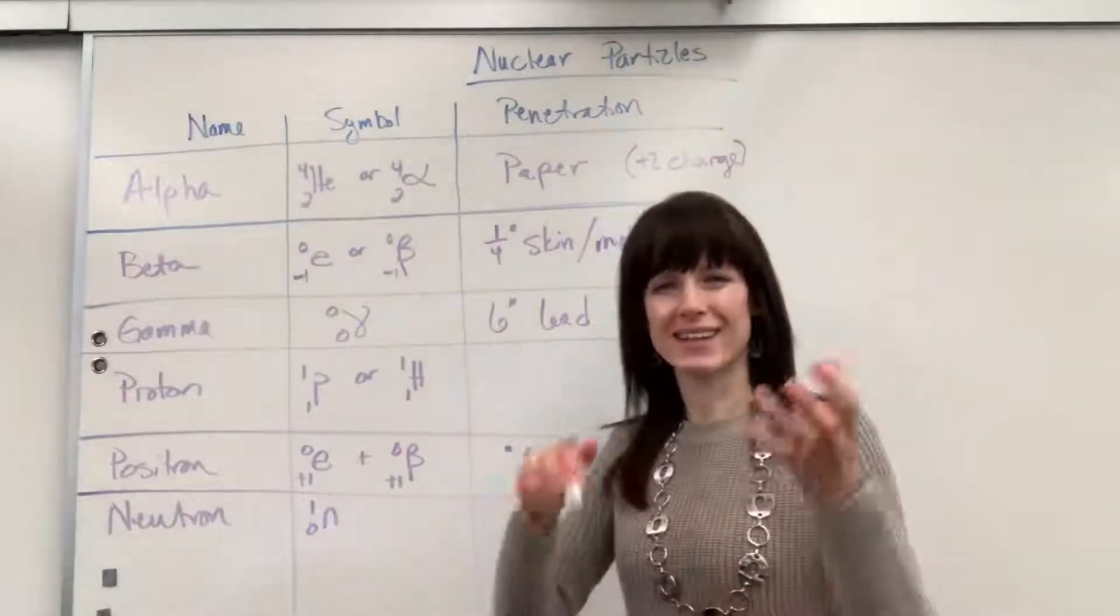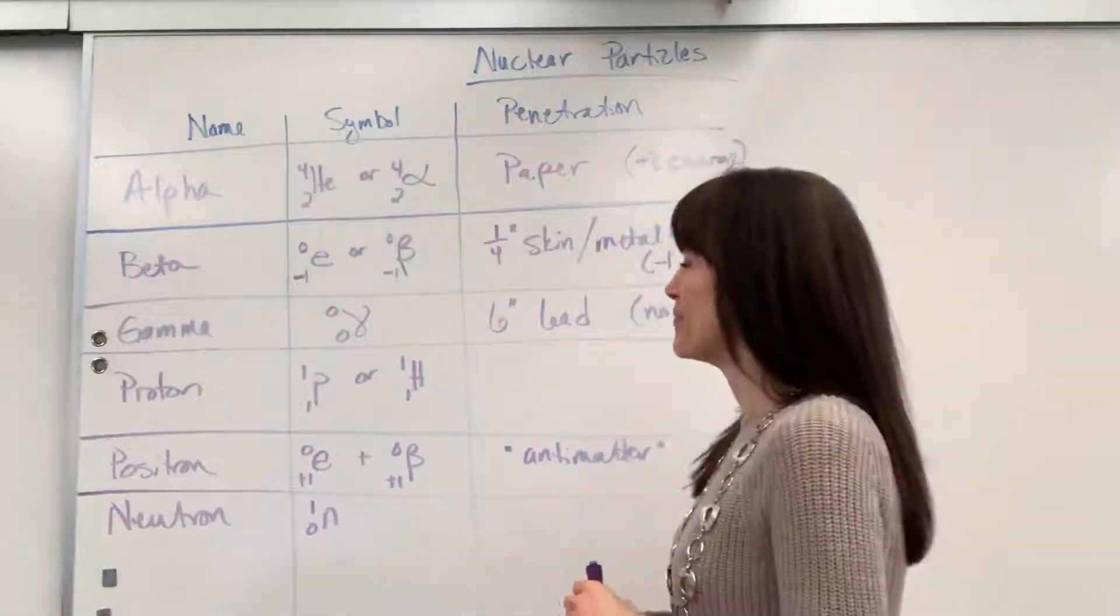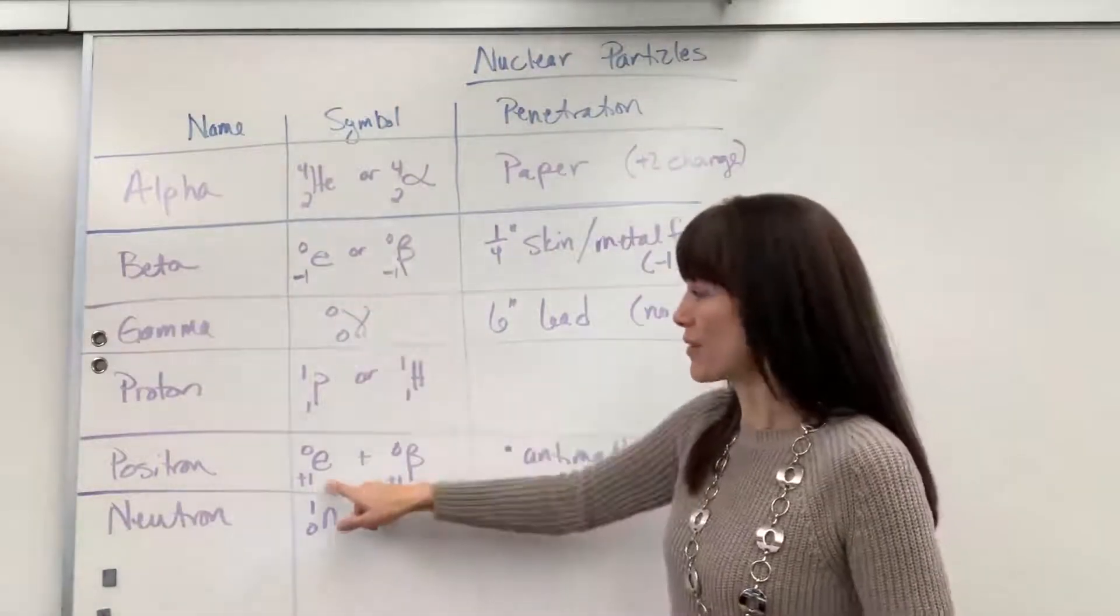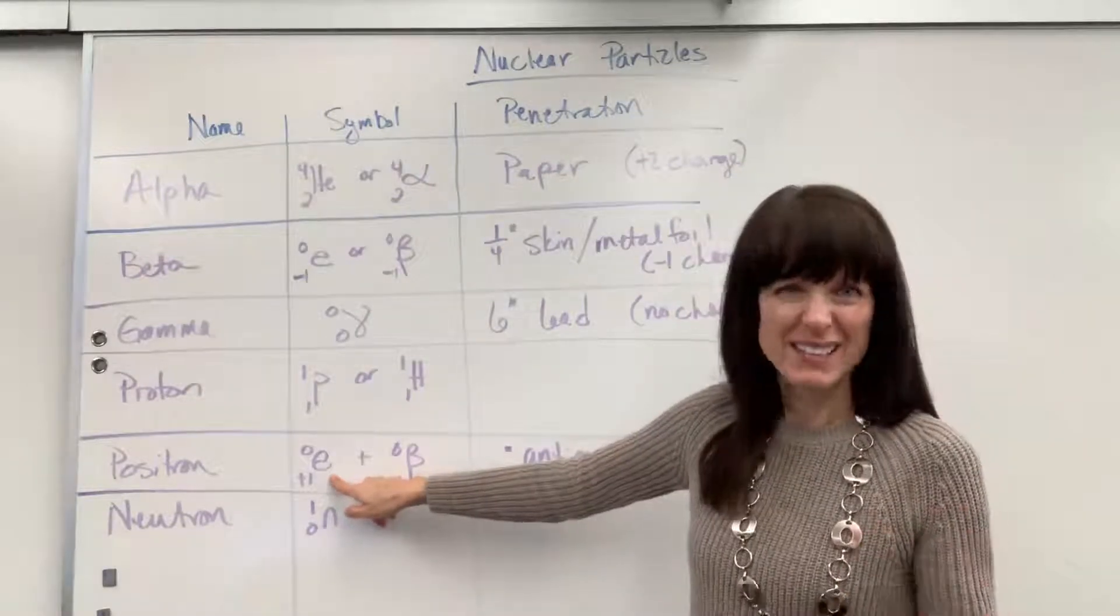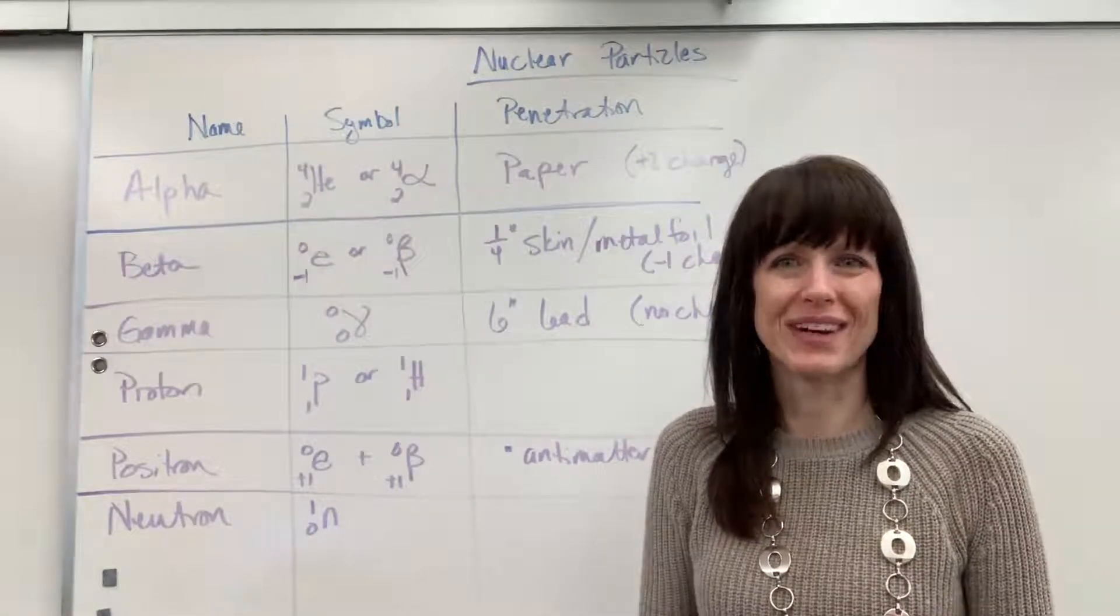Next, a positron. Again another place where your brain might feel tweaked just a little bit. The positron is the opposite in essence of a beta particle. So notice we do e like it's an electron but it's a positive charge. They say plus one. An electron with a plus one.